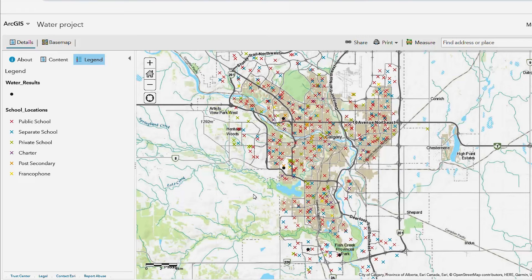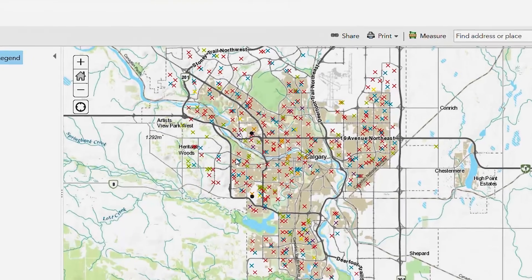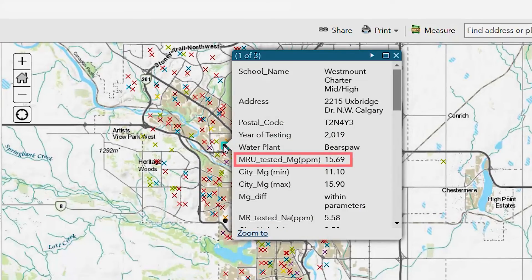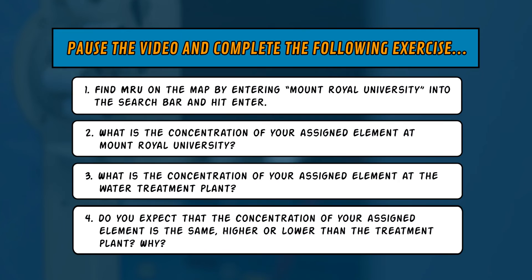The O's on the map represent the schools which MRU has partnered with. Click on one of the O's and you will be able to see the value that we obtained from our experiments, the range of values from the water treatment plant, and the differences between them when compared to our experiment. Pause the video and complete the following exercise.